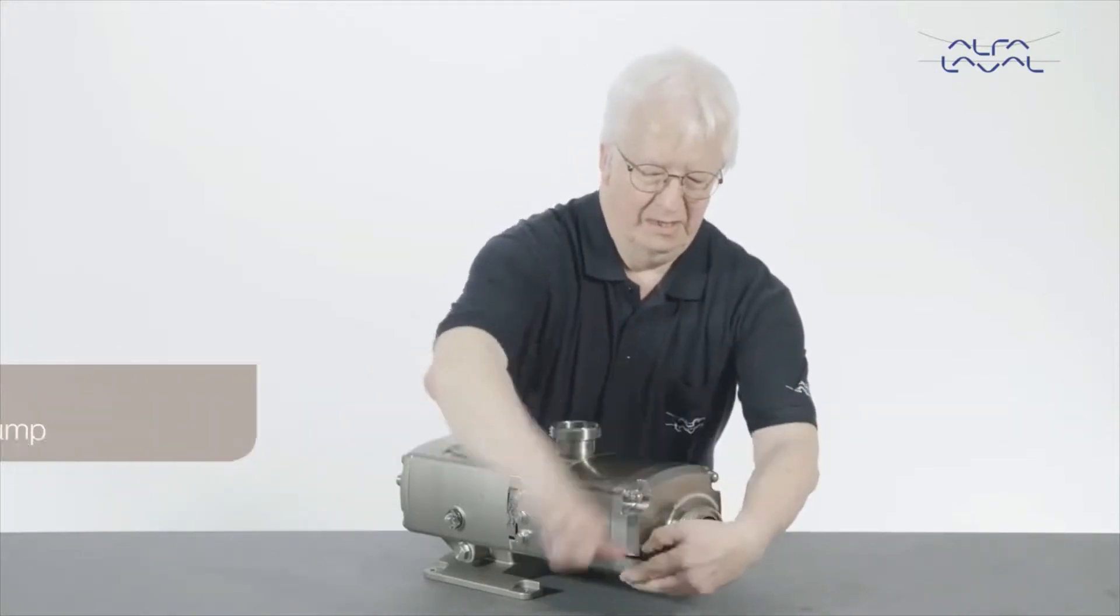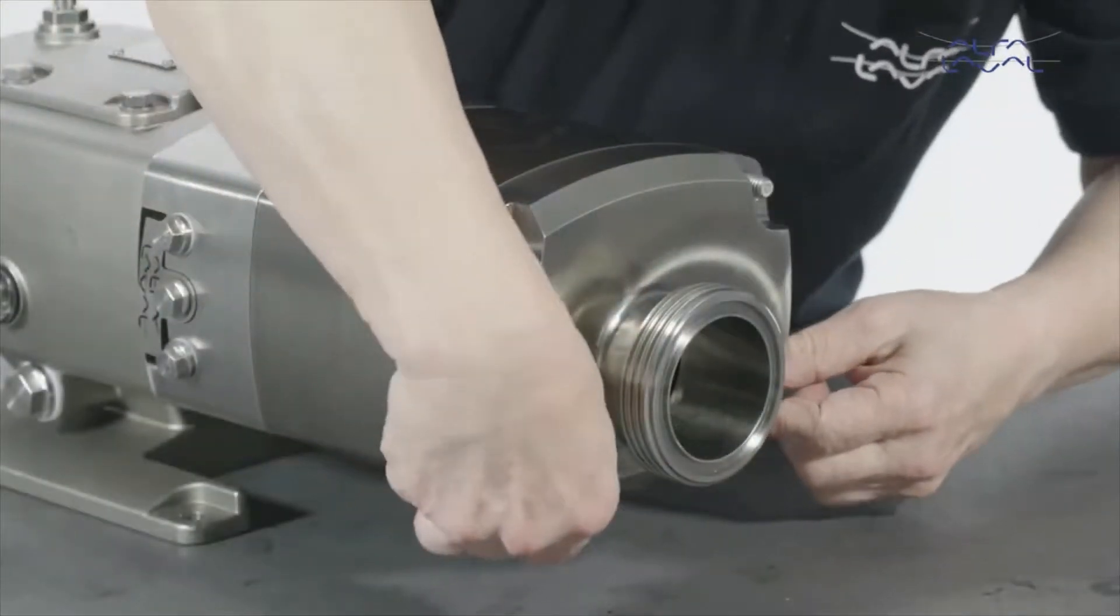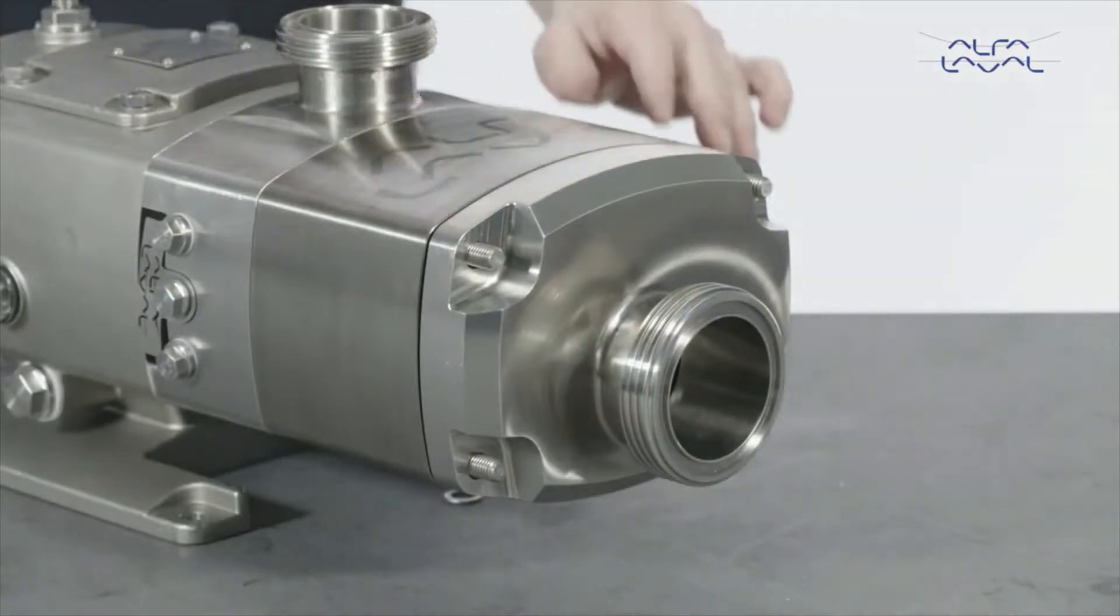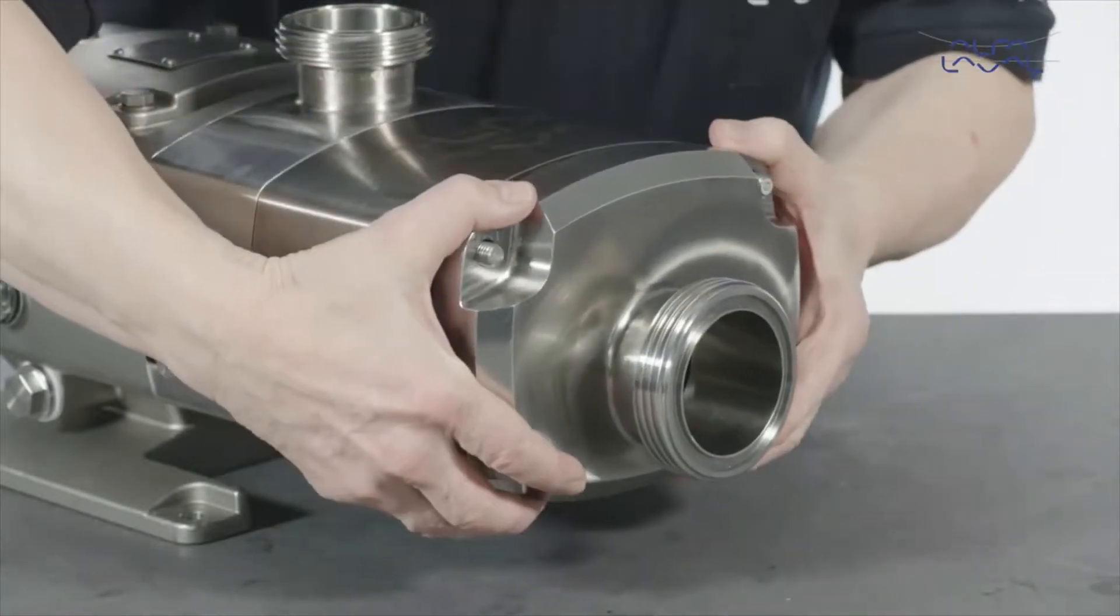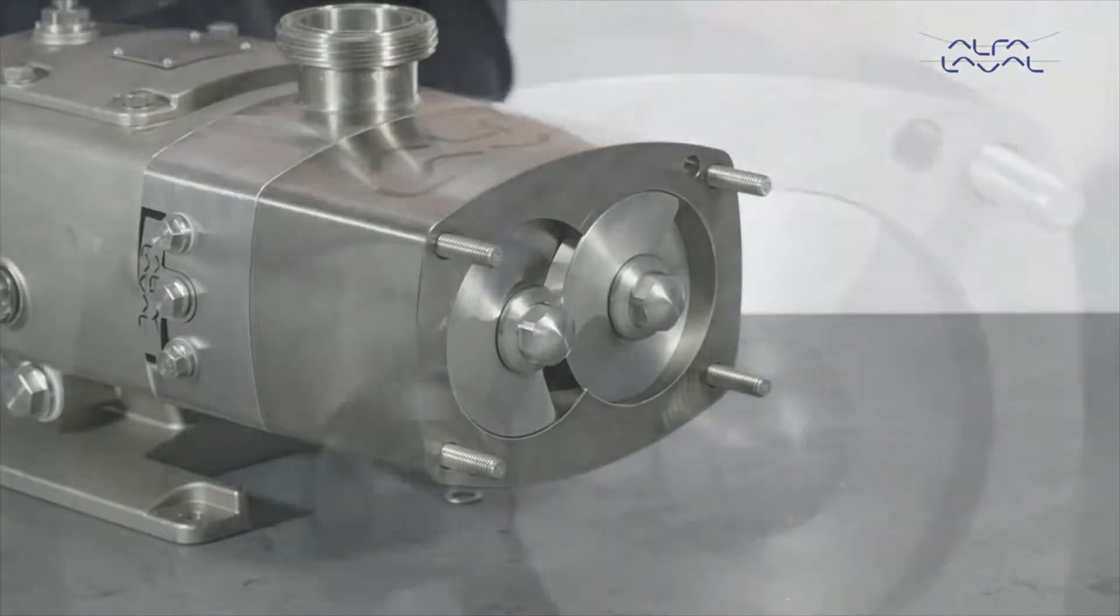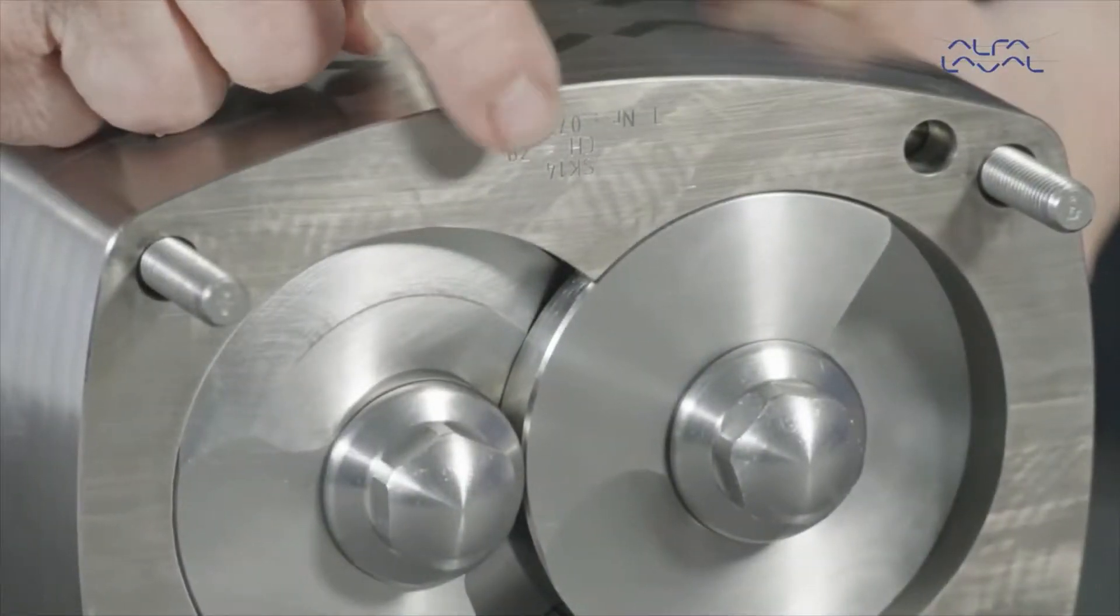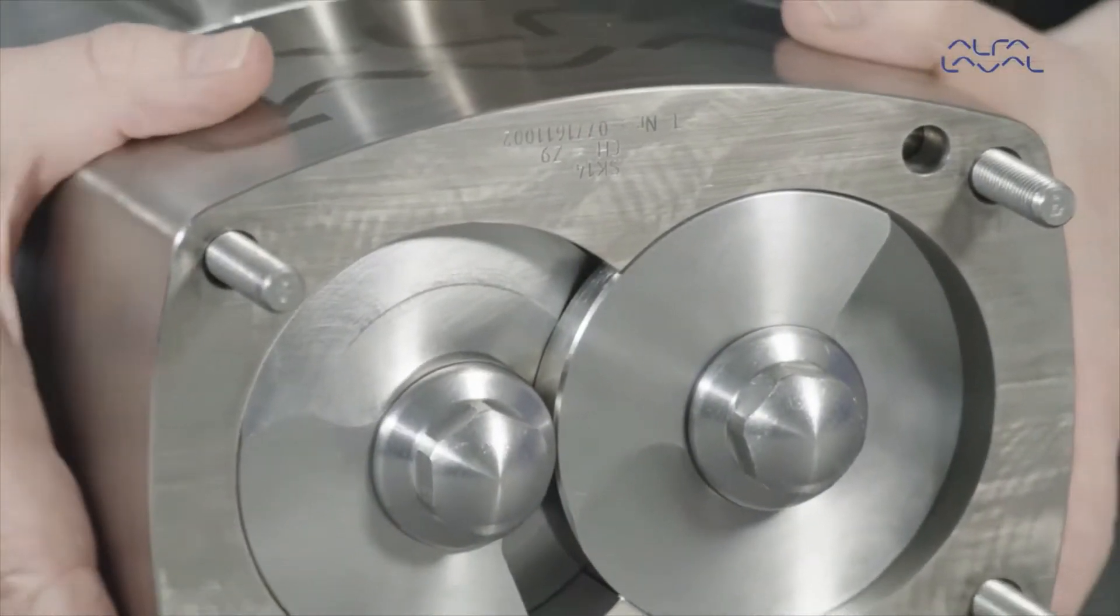Start by removing the pump cover nuts, washers, front cover and front cover elastomer. Then remove the pump casing. Please note the position of the marking.